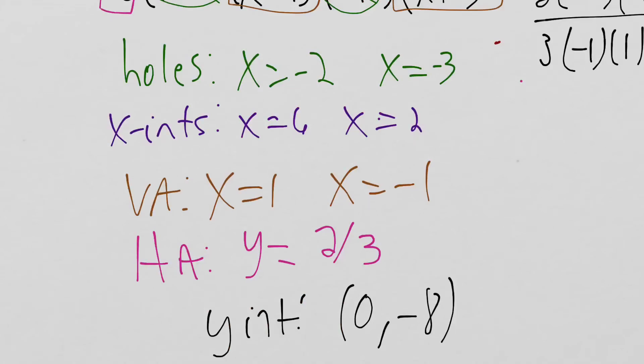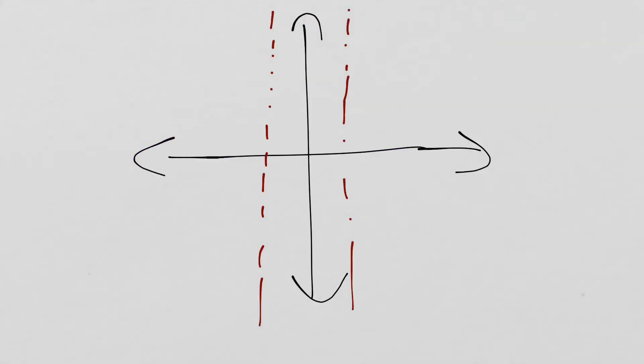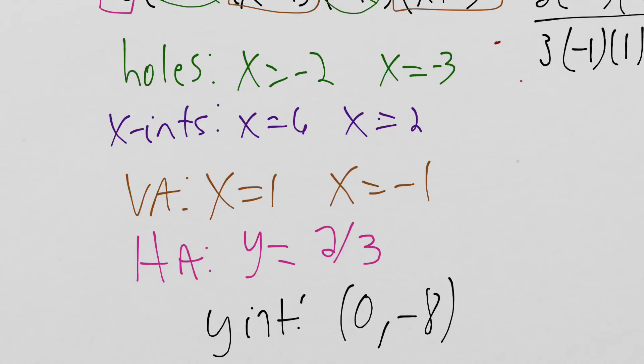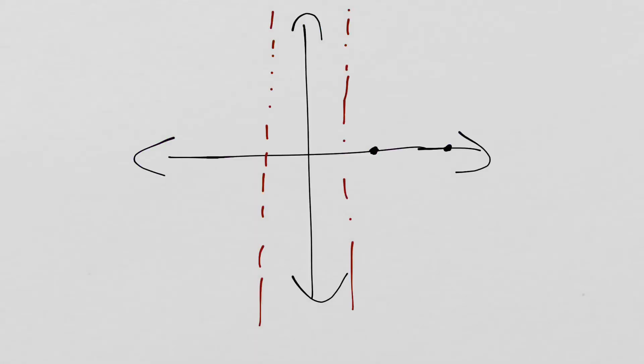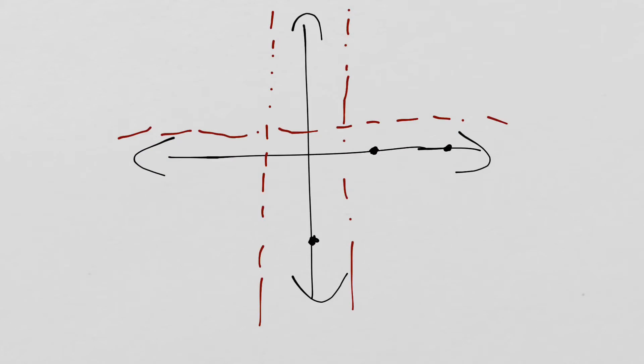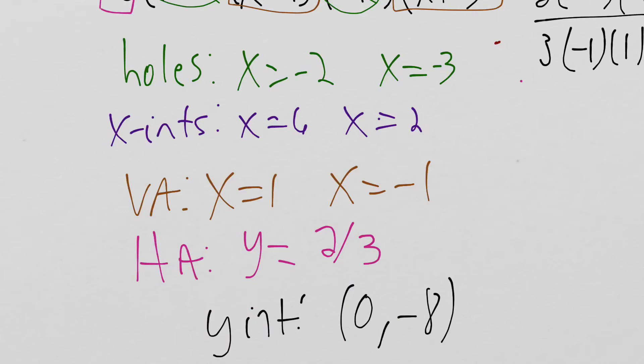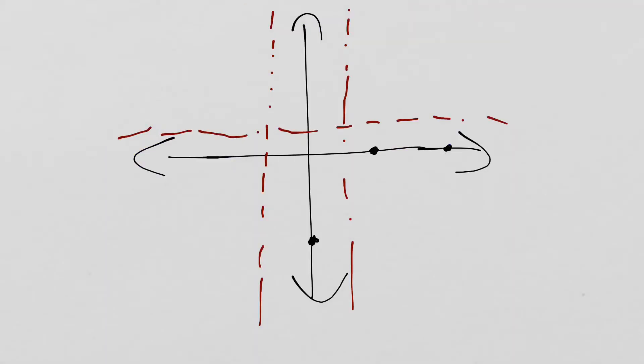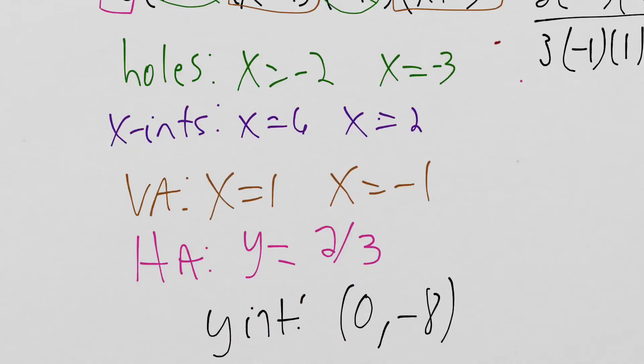What else do we have? We have x intercepts at 6 and 2. So that's positive 1, so 2 should be like right here, and then 6 will be further over. And then we have a horizontal asymptote at 2 thirds. So we'll just throw in a horizontal asymptote here. And then let's do our y intercept at 0, negative 8. So we can just throw that like down here. And notice I'm not labeling anything on this graph, and my reasoning behind that is this is just a sketch, and I have everything labeled right here. I have all my key features.